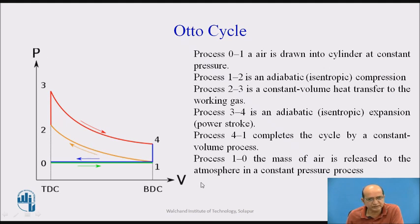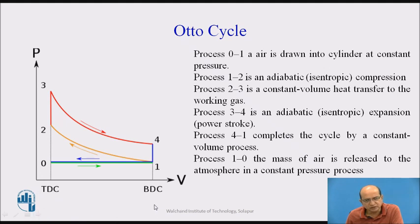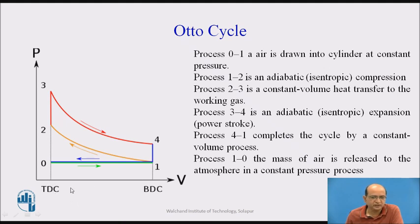With respect to the PV diagram, we will discuss the Otto Cycle's functioning and working. P stands for pressure, V stands for volume. TDC means top dead center and BDC means bottom dead center. P is on the y-axis, V is on the x-axis. The volume up to TDC is the clearance volume; between TDC and BDC is the swept volume; and up to BDC from the origin is the total volume. The distance between TDC and BDC is called the stroke length.